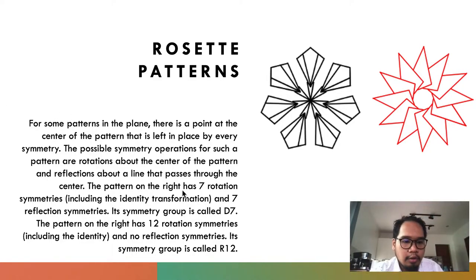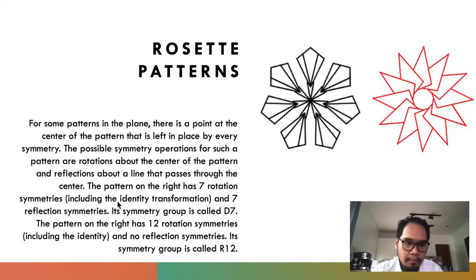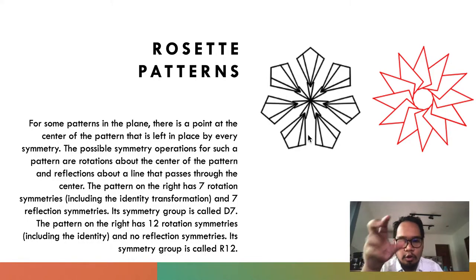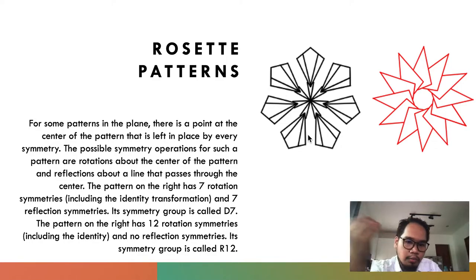The pattern on the right has seven rotation symmetries, including an identity transformation, and seven reflection symmetries. You can try to imagine these — one, two, three, four, five, six, seven. So you may rotate it into seven parts, or you may imagine reflecting it seven times.